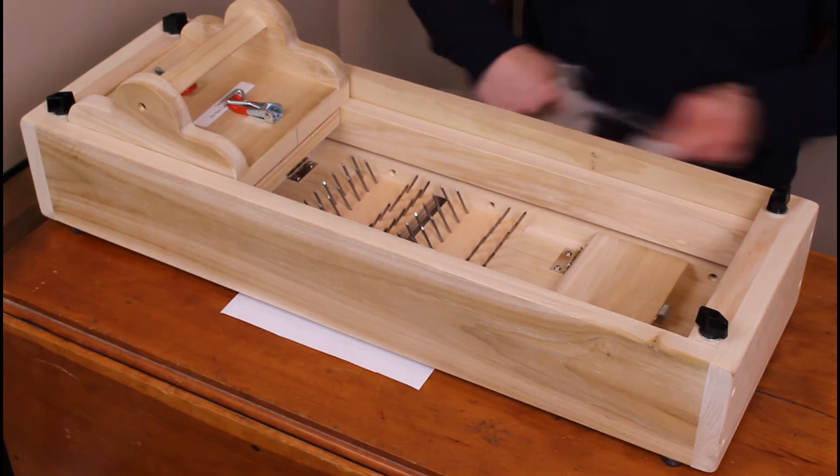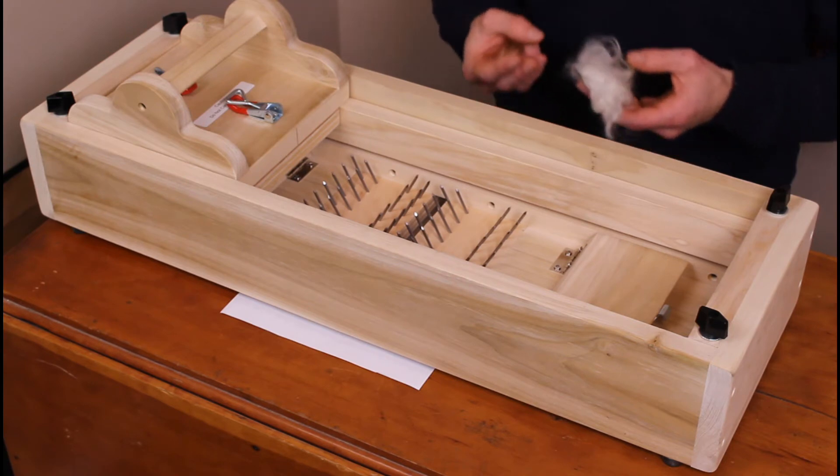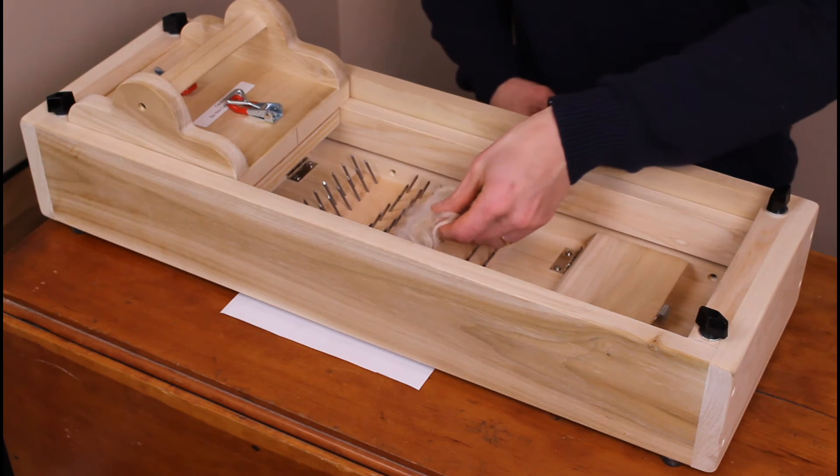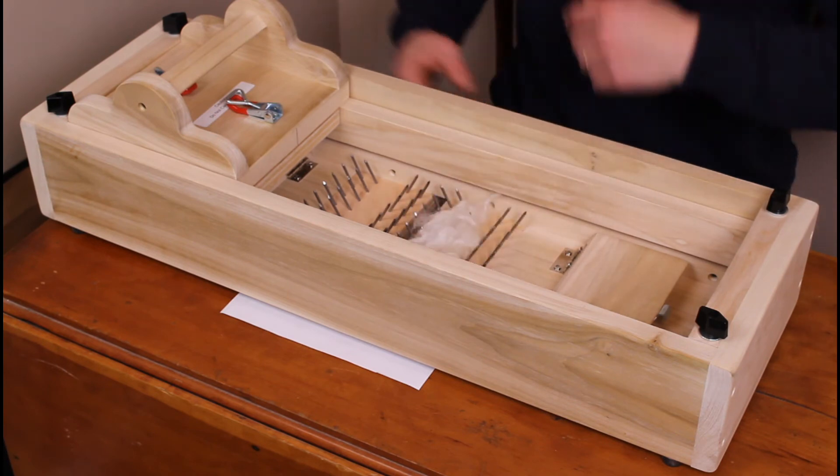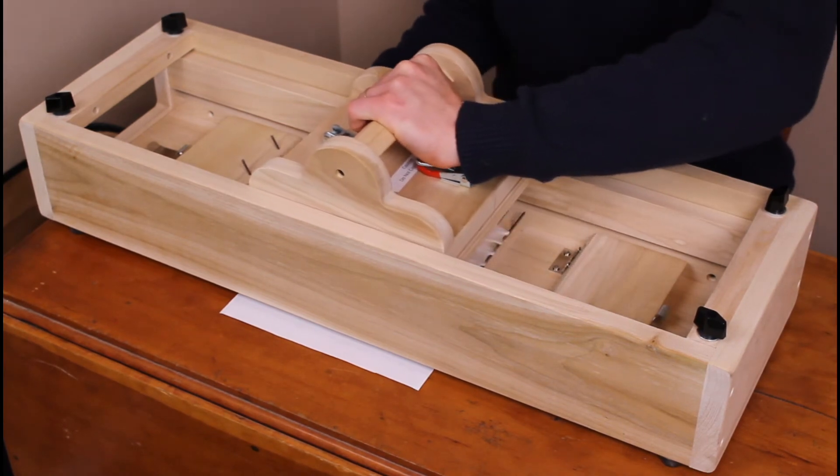Avoid the temptation to put too much fiber in at once. A handy trick is to hold your three middle fingers together. This is a good amount of fiber to send through the picker at a time. Drop it between the first two rows of teeth and work the slider back and forth. The picker will fluff up the fiber and send it out the back.